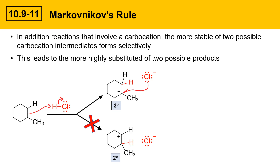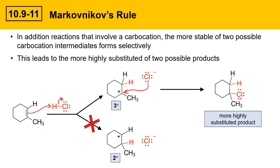The nucleophile then attacks that carbocation. Chloride attacks the tertiary carbocation, leading to a product where the chlorine is in the more highly substituted position — attached to the more substituted of the two carbons of the alkene. When thinking about Markovnikov's rule, it's valuable to draw the carbocation intermediate, think about the stability of the two possible carbocations, and realize that the more substituted carbocation wins. That's Markovnikov's rule summarized.